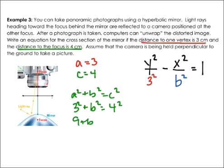So nine plus B squared is equal to sixteen. Subtract nine from both sides, and we get that B squared is equal to seven. And instead of square rooting both sides, I'm just going to stop.